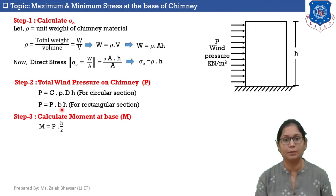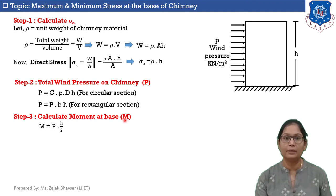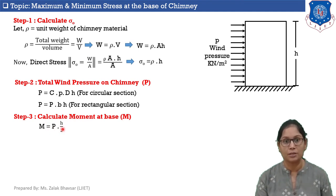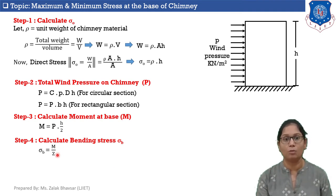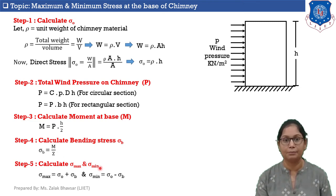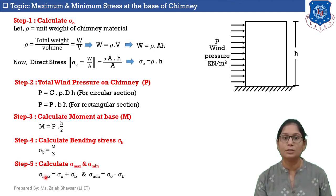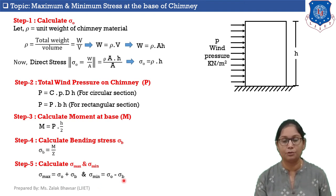Step number three: calculate moment at the base. The moment M developed at the base of the chimney due to wind pressure equals P times h divided by 2. Step number four: calculate bending stress sigma b, where sigma b equals M upon Z, with M being the moment and Z being the section modulus. Step number five: calculate sigma maximum and sigma minimum. Sigma maximum equals sigma zero plus sigma b, and sigma minimum equals sigma zero minus sigma b.